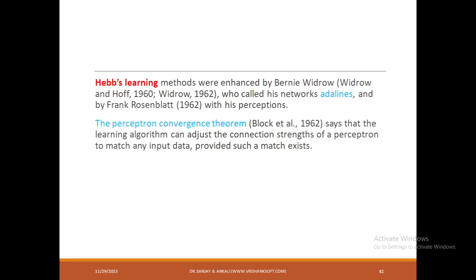Hebb's learning was taken forward by researcher Frank, resulting in what was called Adaline. The Perceptron convergence theorem came into existence during 1962, which states that a learning algorithm can adjust the connection strength of a perceptron to match any input data, provided such a match exists.